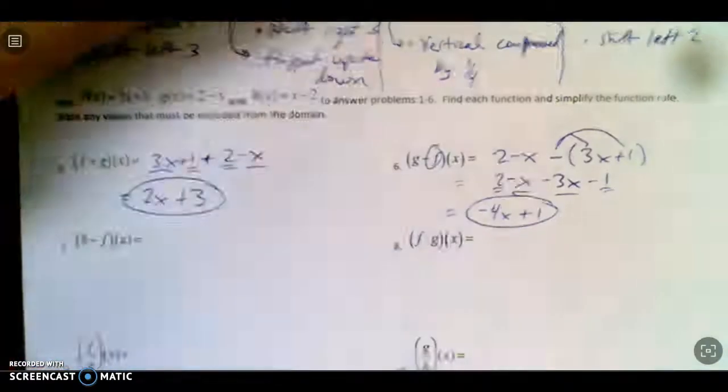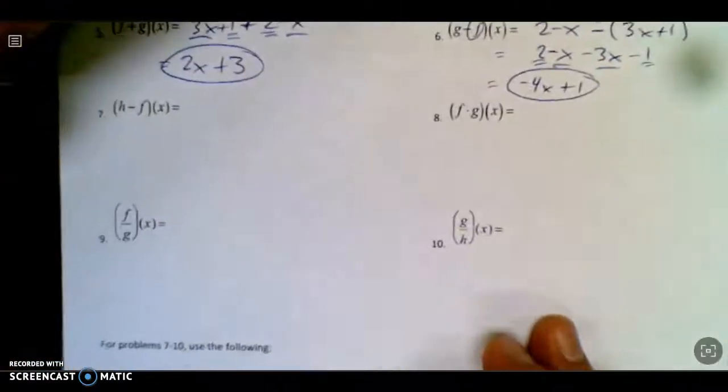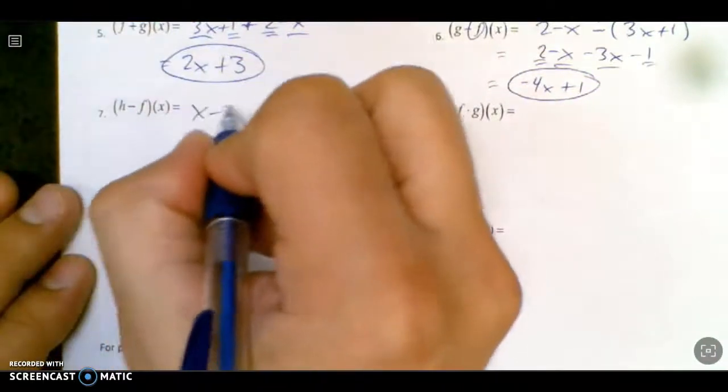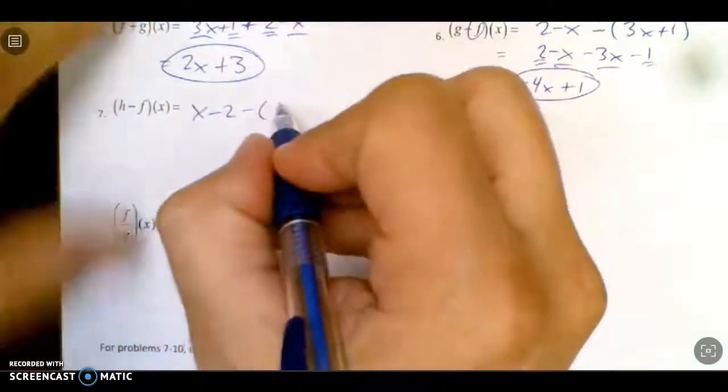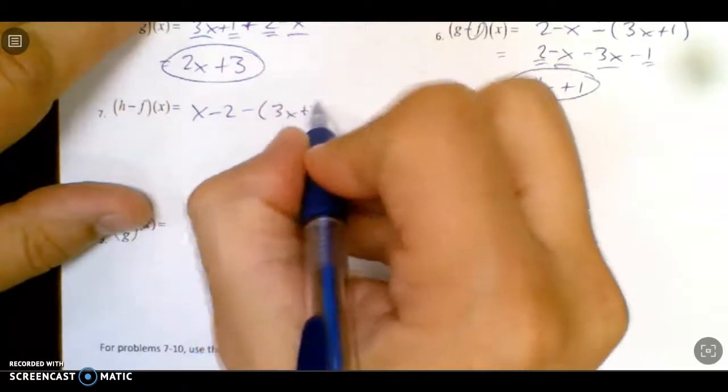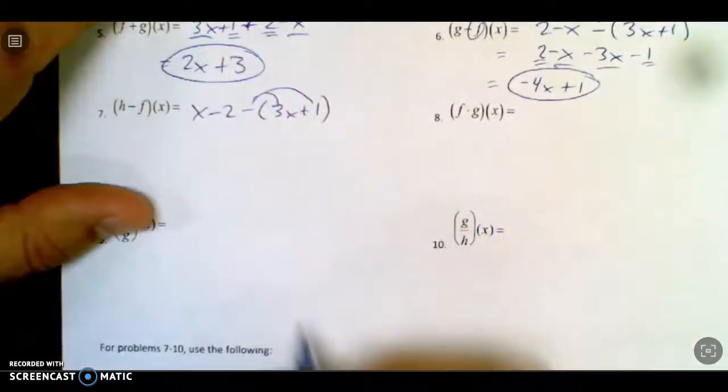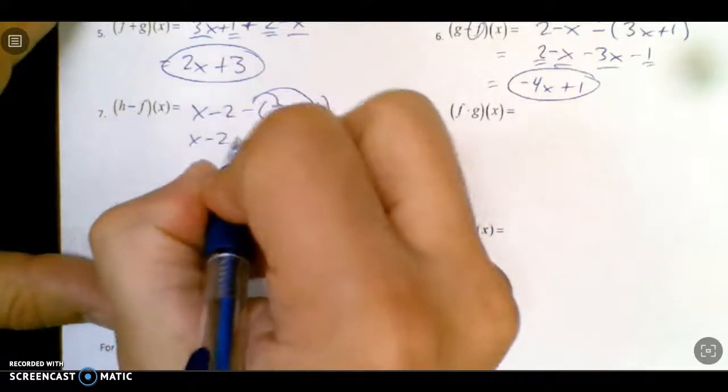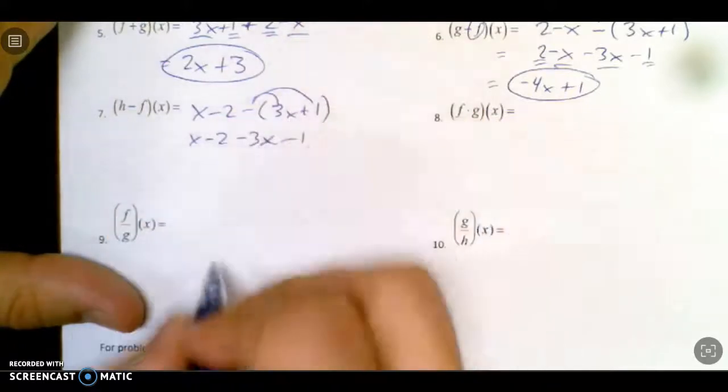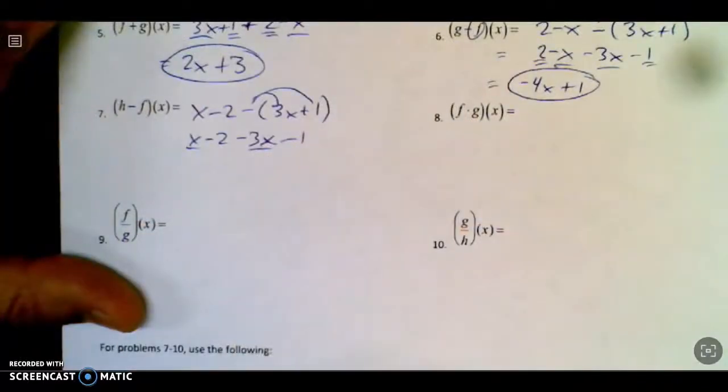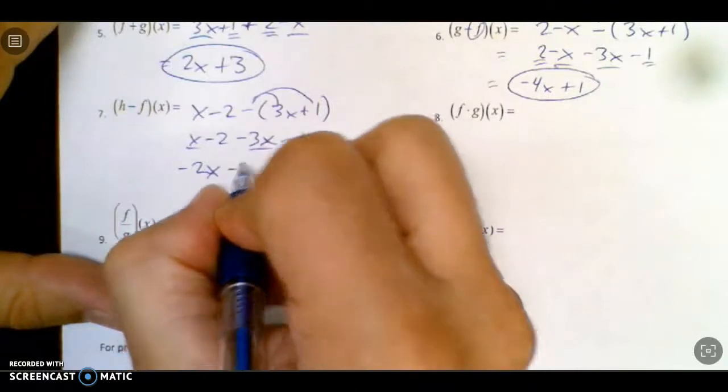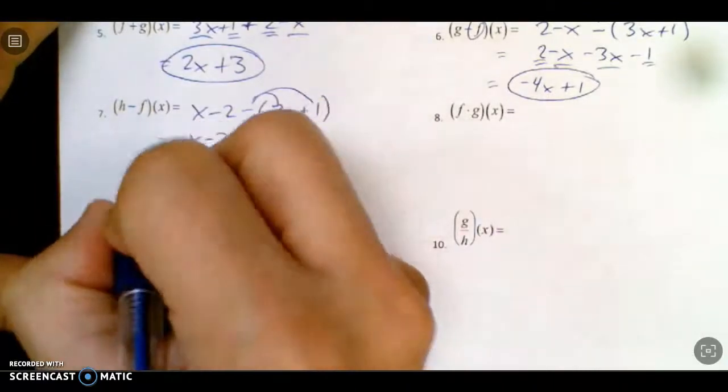And we have h minus f. On this one, so we've got h is x minus 2, and then f is 3x plus 1. That minus sign goes in there again. So just another chance to be kind of careful with this. And we combine like terms. We get negative 2x minus 3. So cruising along.